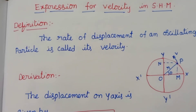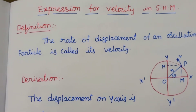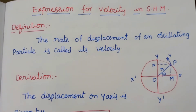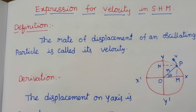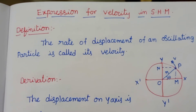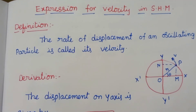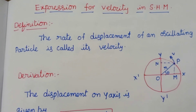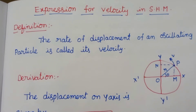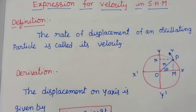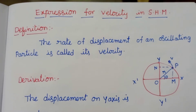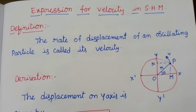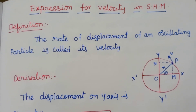Hi students. Now we have simple harmonic motion. First, the velocity definition. In the velocity definition, we calculate the displacement equation — the rate of displacement of an oscillating particle. In a unit of time, the particle will be displaced, and then the velocity is calculated.